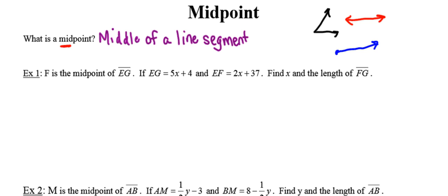Number one says that point F is the midpoint of line segment EG. If the distance between points E and G is 5X plus 4, and the distance between points E and F equals 2X plus 37, find X and the length of line segment FG. They don't give me a picture, so anytime in geometry that I don't have a picture, the very first thing I'm going to do is use the information provided to sketch a diagram. That way I'll have a nice visual of exactly what's going on.